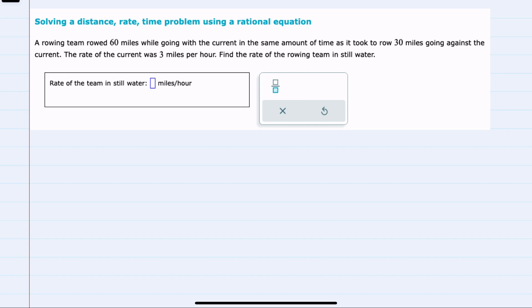In this example, we have a rowing team that rows 60 miles going with the current, and then in the same amount of time it took to row 30 miles against the current.